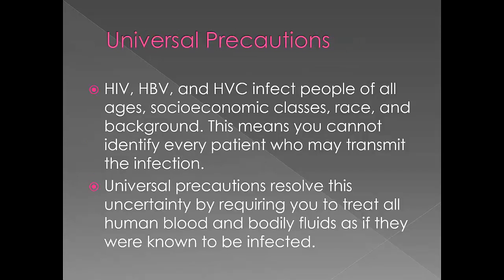HIV, Hepatitis B, and Hepatitis C infect people of all ages, socioeconomic classes, races, and backgrounds. This means that you cannot identify every patient who may transmit an infection. Universal precautions resolves this uncertainty by requiring you to treat all human blood and bodily fluids as if they were known to be infected.